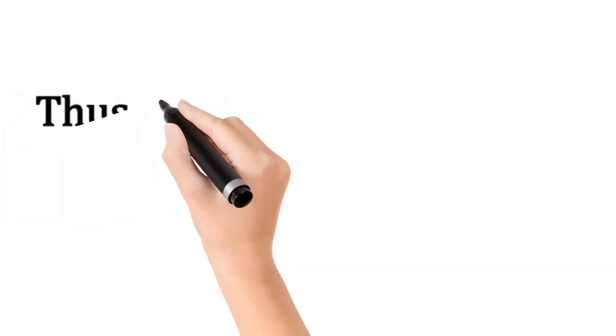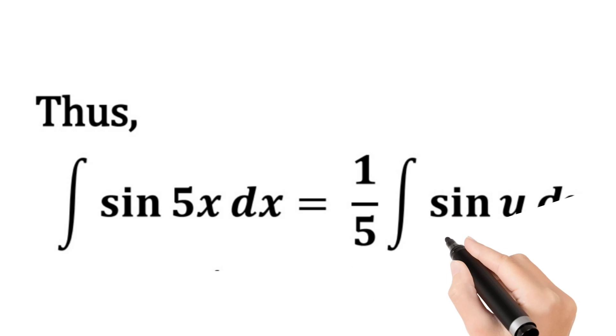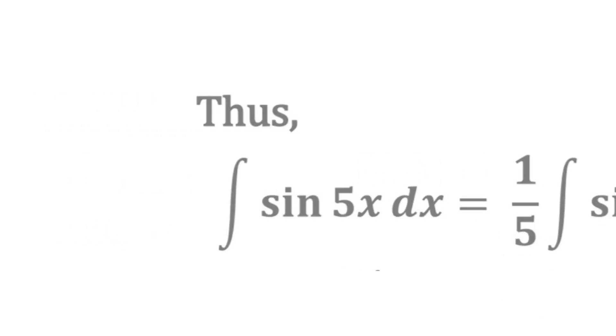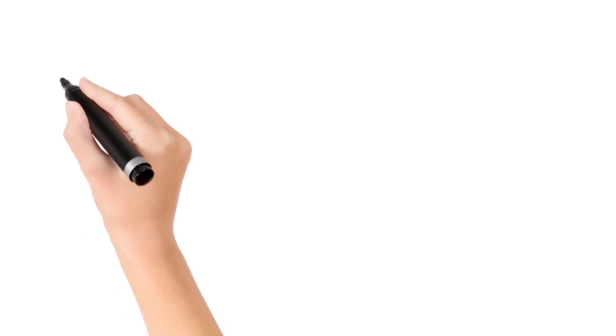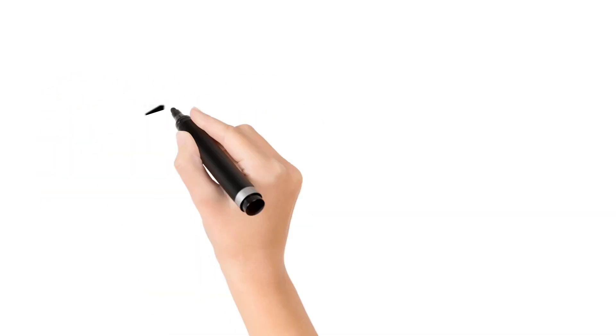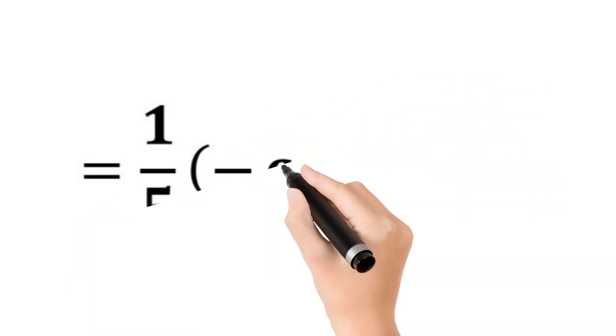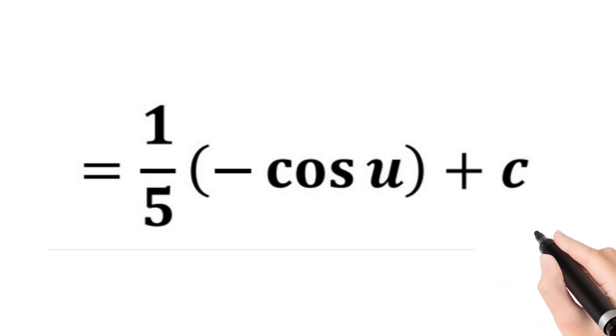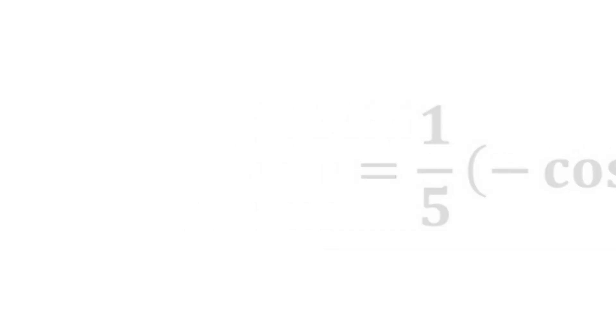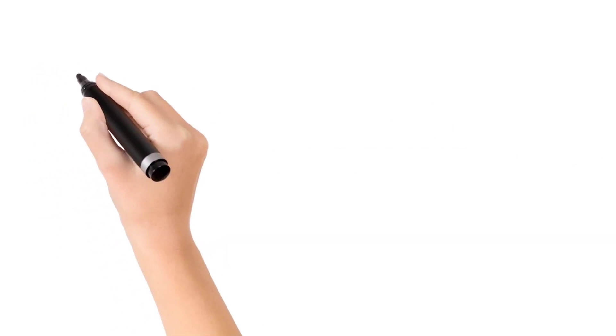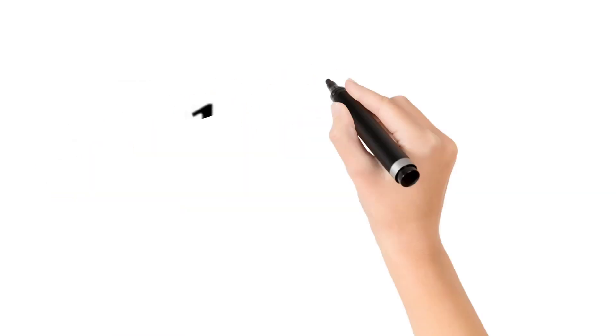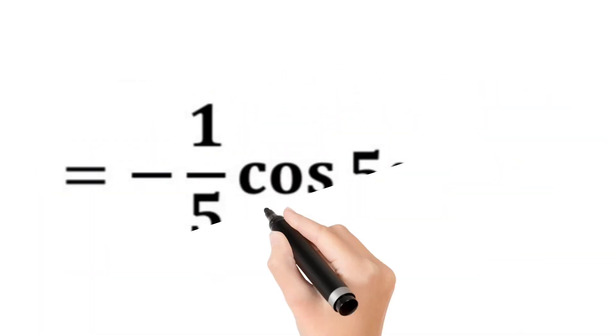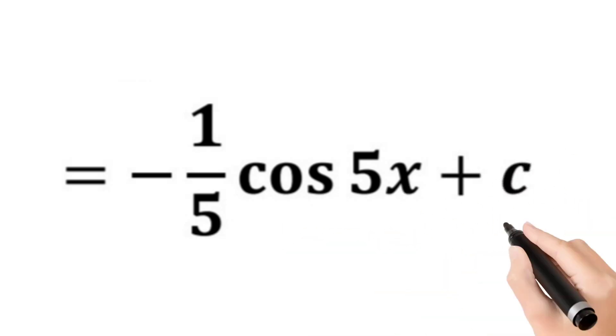Thus, the integral sin(5x) dx becomes 1 over 5 multiplied by integral of sin u du. The integral of sin u du is equal to minus cos u plus c. So we will now have integral of sin(5x) dx is equal to 1 over 5 multiplied by minus cos u plus c, and that gives us minus 1 over 5 cos(5x) plus c. Since u is equal to 5x, so our result is minus 1 over 5 cos(5x) plus c.